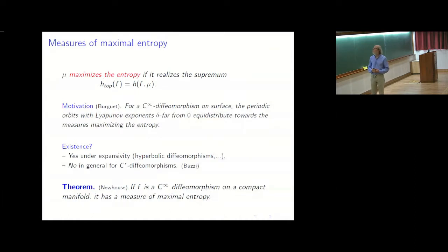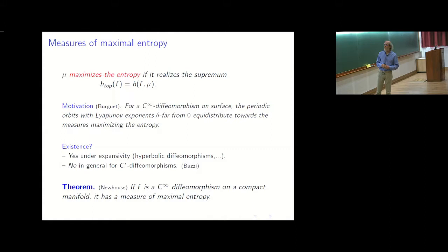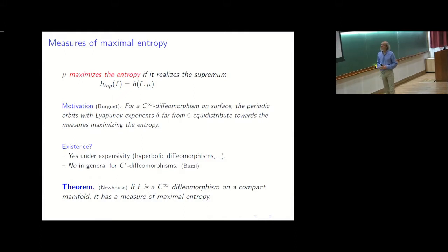A motivation in our setting, for smooth diffeomorphisms on surfaces, has been given recently by David Burguet. These measures explain how periodic orbits distribute. For that you need to consider periodic orbits that are enough hyperbolic, so whose Lyapunov exponents are bounded away from zero. If you look at all such periodic orbits whose period is bounded by n, when n goes to infinity it converges towards some maximizing measure. This is in dimension two.